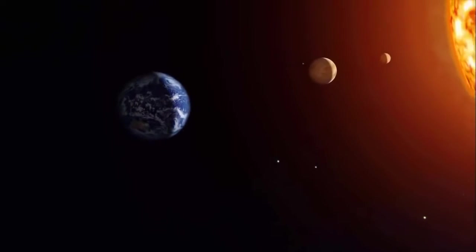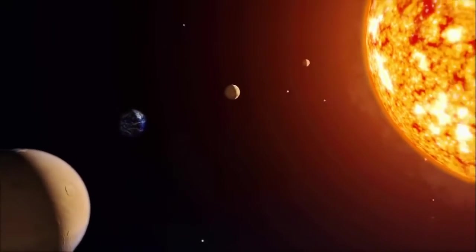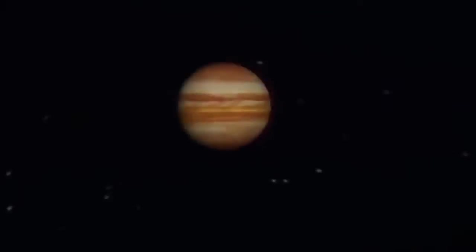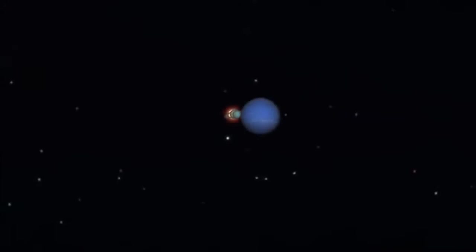Our solar system contains some pretty unusual planets, but we're not alone. Sophisticated telescopes have now identified nearly 300 planets that are located well beyond our solar system. They're known as exoplanets.